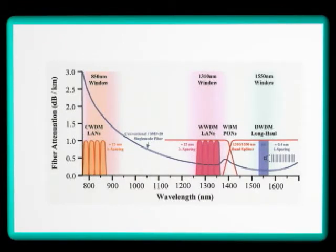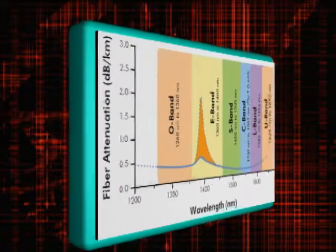Historically, the 850 nanometer window was the first to be used, with the other windows developed as fiber manufacturing technology improved. The International Telecommunications Union, or ITU, has specified six bands for fiber-optic transmission.